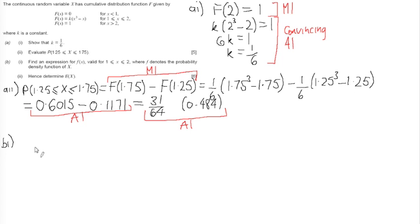Let's have a look at b part i. First of all, we want to find an expression for f of x for 1 less than or equal to x less than or equal to 2, where f denotes the probability density function of x. What we know is that we can find the probability density function by differentiating the cumulative distribution function. So what I'm going to do is I'm going to do d by dx. So I'm going to indicate that I'm differentiating. I'm going to multiply up k times this, so 1 sixth times x cubed, x cubed minus x. So I get x cubed over 6 minus x over 6, just so I've got